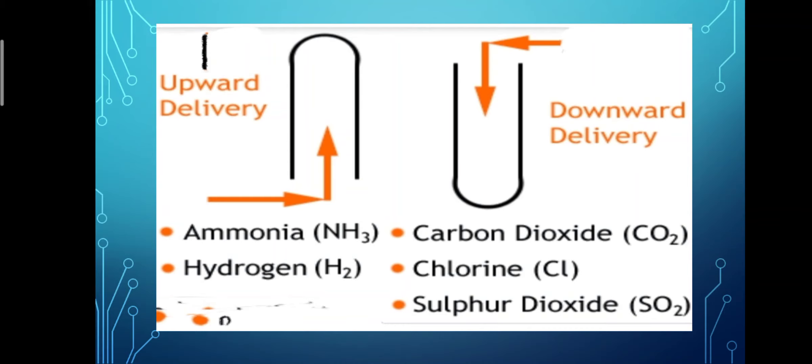What is upward delivery? Ammonia and hydrogen gas, these two gases are less dense than air, so they are collected by upward delivery or downward displacement of air. While carbon dioxide, chlorine and sulfur dioxide, these gases are denser than air, so they are collected through downward delivery or upward displacement of air.